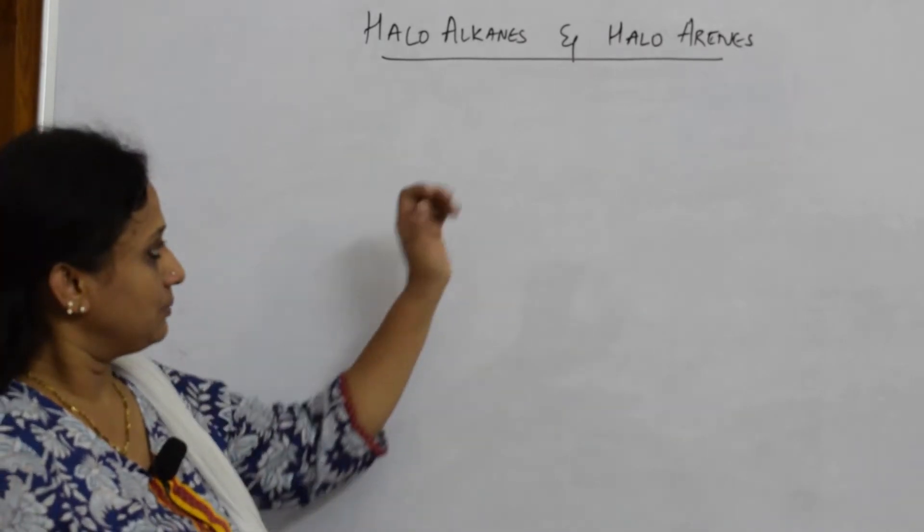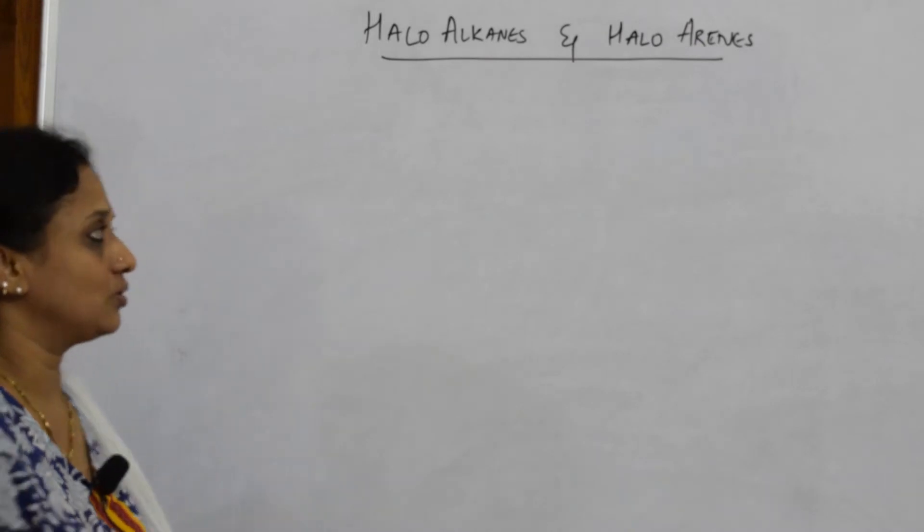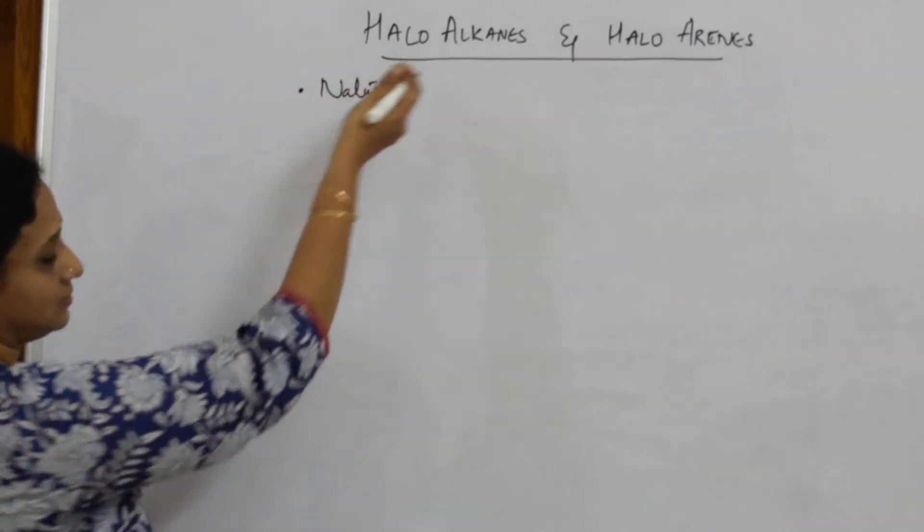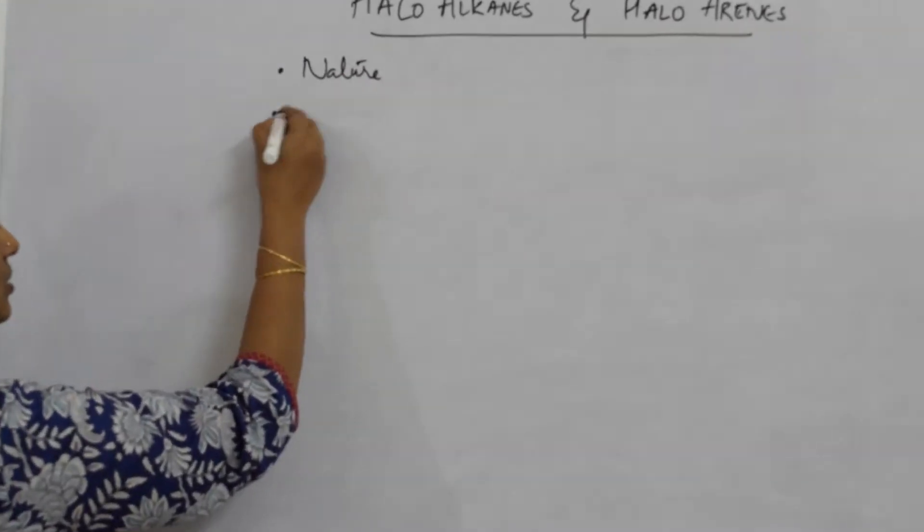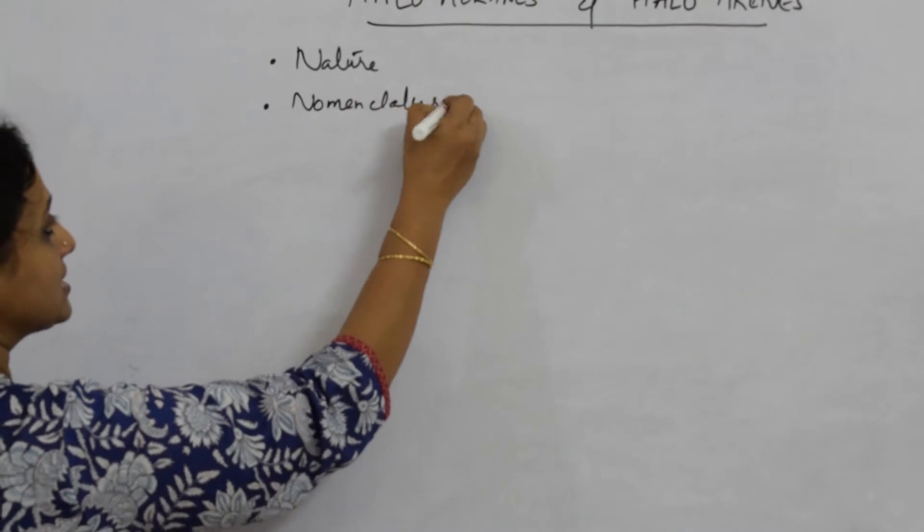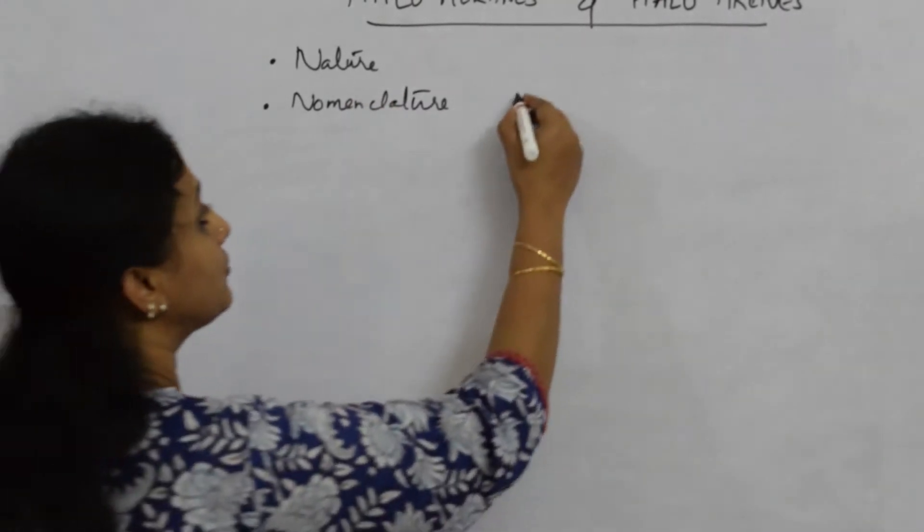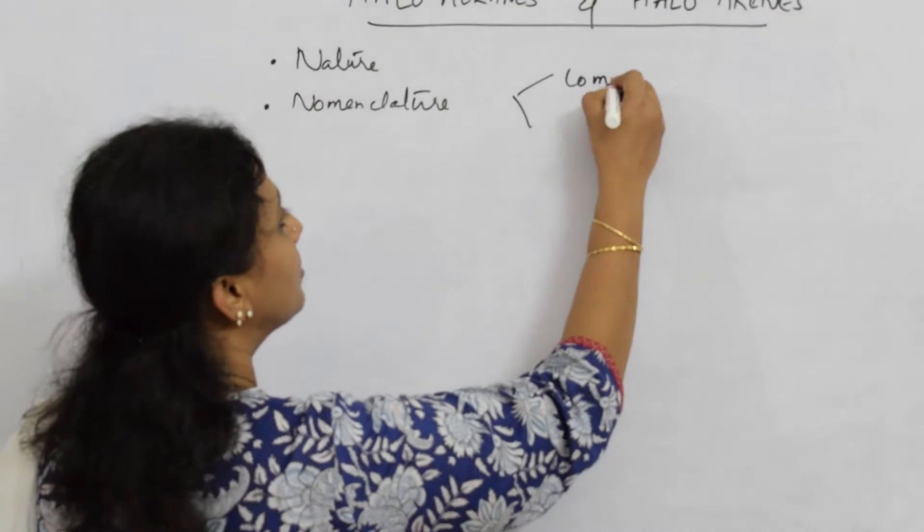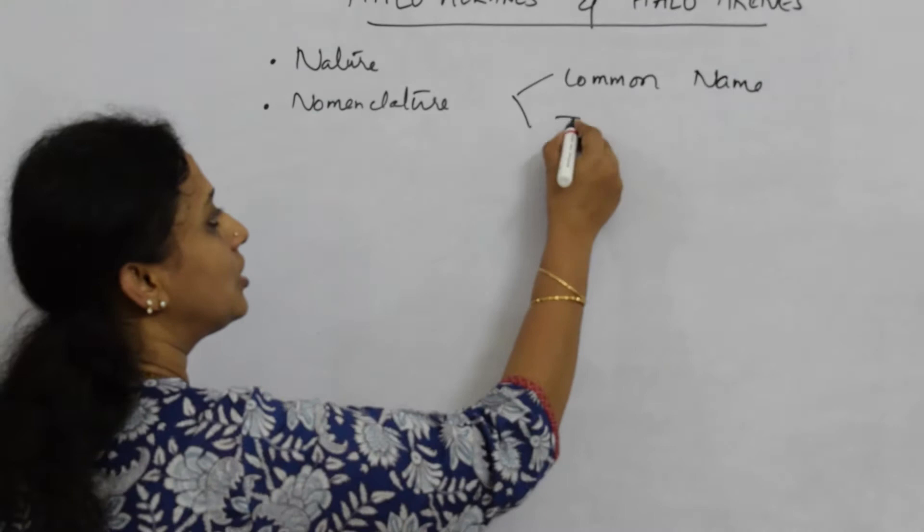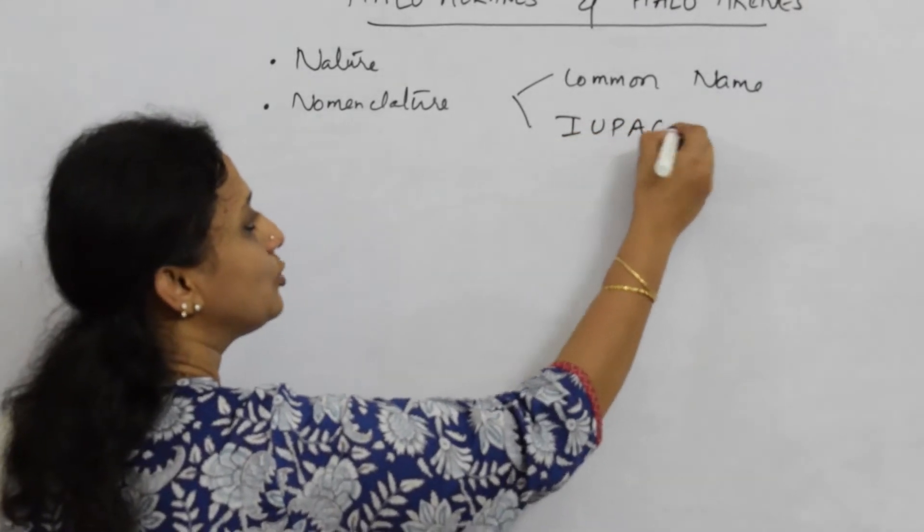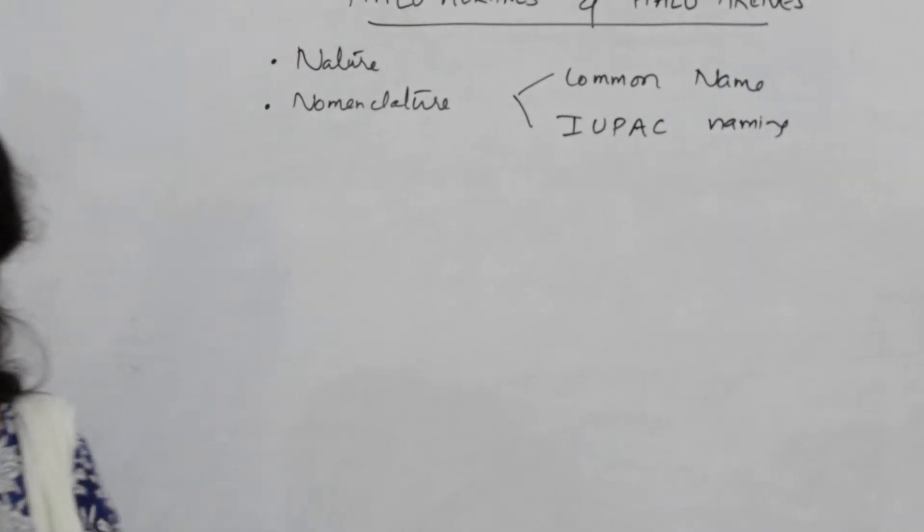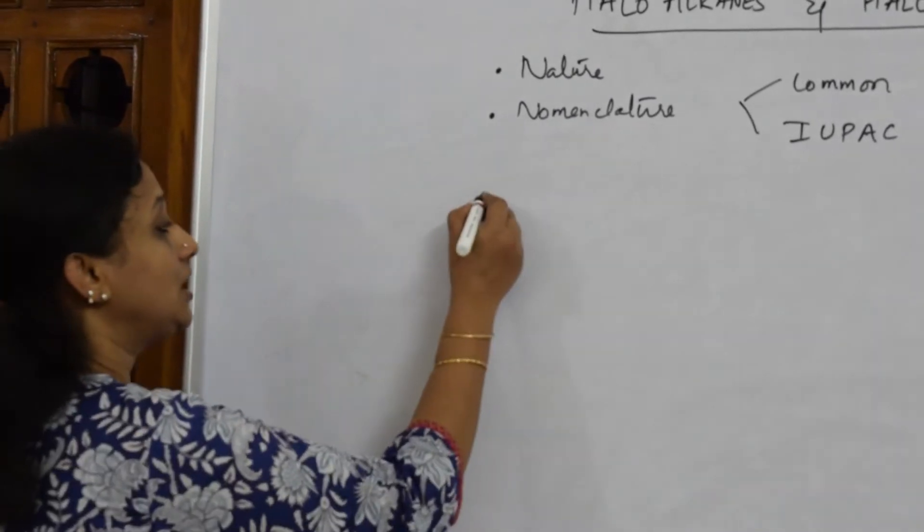Basically the board wants us to know about the nature of halo alkenes and halo arenes. They want us to learn the nomenclature of these compounds - how should I name the compound in terms of common name or IUPAC nomenclature. For all the four chapters prescribed, after nature and nomenclature...